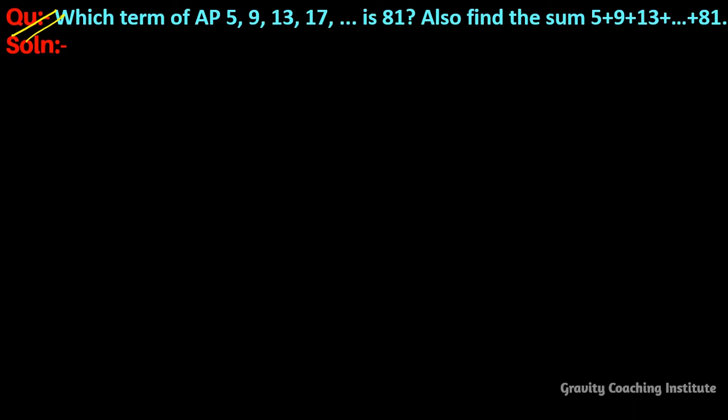Question: Which term of AP 5, 9, 13, 17... is 81? Also find the sum 5 + 9 + 13 + ... + 81.